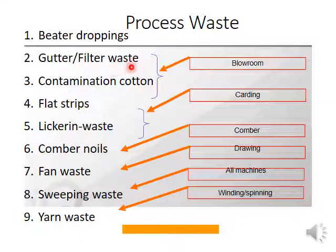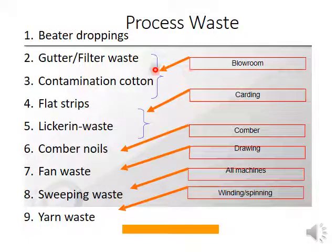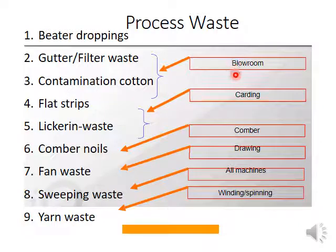Filter waste basically comes from the humidification plant. The word 'blow room' comes from blowing of air — the material is transported through air, and that air has to be filtered. Dust particles are deposited in the filter and accumulated, and these are known as filter waste. Contamination cotton is removed by contamination clearer machines which are present in the blow room line.